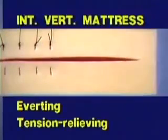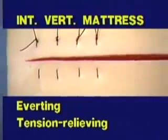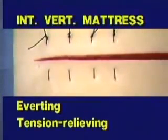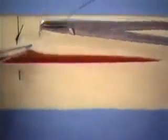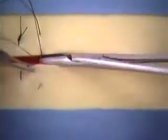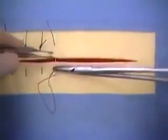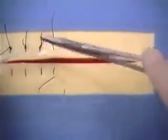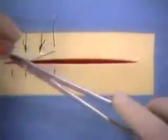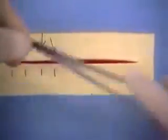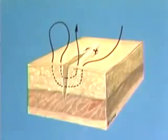The eighth pattern to be demonstrated is the Interrupted Vertical Mattress Suture. This is an everting and tension relieving suture pattern. The Vertical Mattress Suture is introduced 8 to 10 millimeters from the incision on one side, passed across the incision line, and made to exit an equal distance on the opposite side. The needle is then reversed and returned perpendicular to the incision line, to the opposite side by passing 4 millimeters from the incision on both sides. The knot is tied on the side of origin. This illustration shows a completed Interrupted Vertical Mattress Suture.